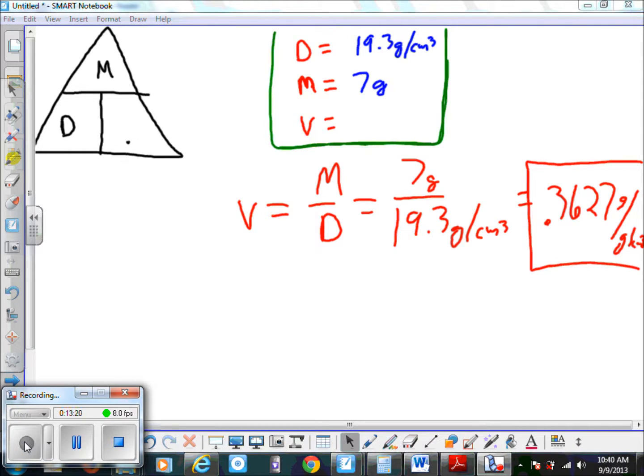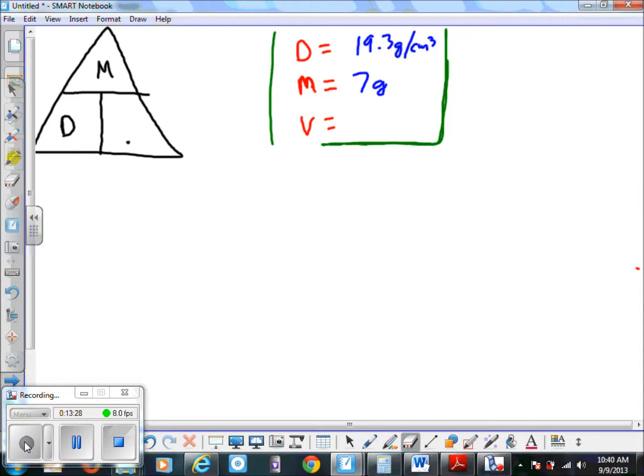If you look at number two on the worksheet, you notice that it says 23.7 liters of iron. So there's two things you have to do with this one. The first thing you have to know and you have to memorize for the test is one milliliter is equal to one cubic centimeter.